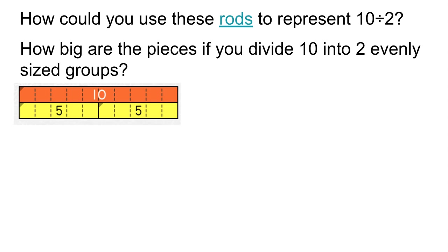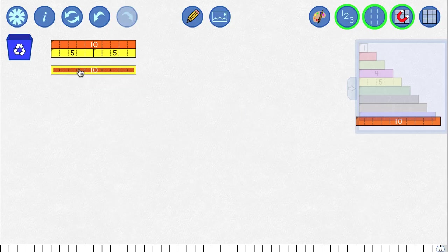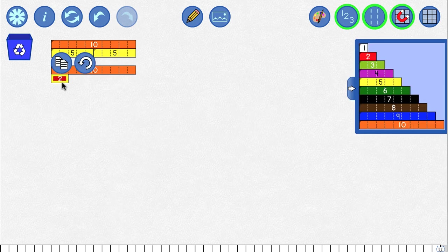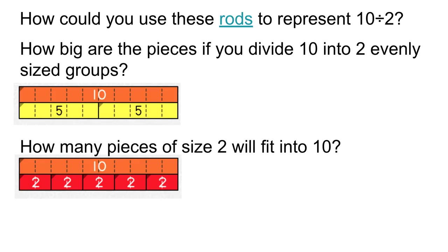A second way to consider division is by taking a rod of size ten and seeing how many pieces of size two fit in it. A similar question we could ask is: how many pieces of size two will fit into ten? The answer is five. So either of these representations both give us the answer ten divided by two equals five. Now we'll keep those in mind as we move into dividing by decimals.